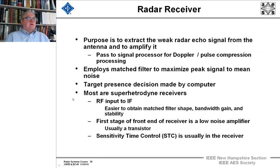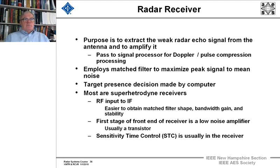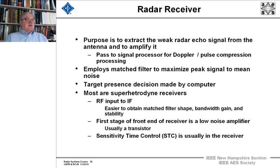The purpose of the receiver is to extract those very weak radar echoes from the antenna, amplify them, and then pass them on into the signal processor for Doppler processing and pulse compression. We'll employ a matched filter optimized to the transmit pulse, which gives us the maximum peak signal-to-mean noise ratio. The decision of a target's presence will be made by a computer after applying an adaptive threshold.